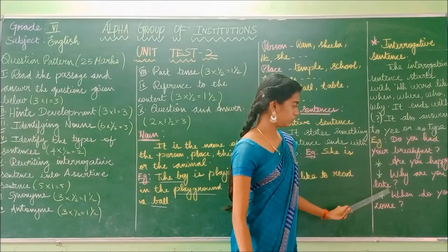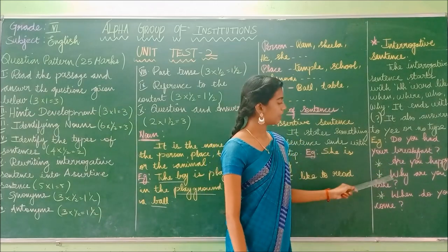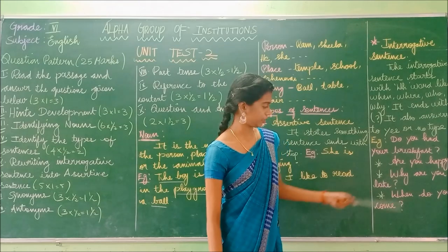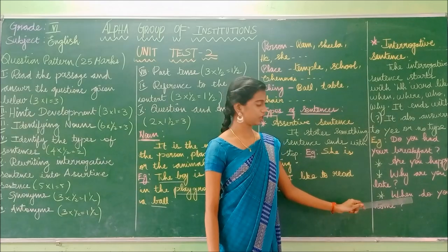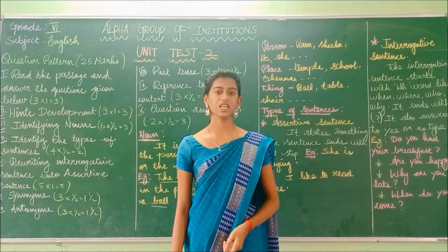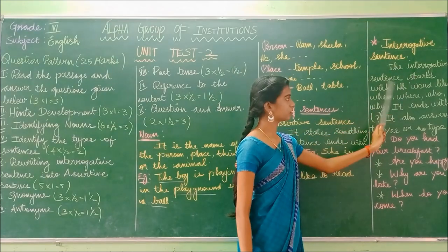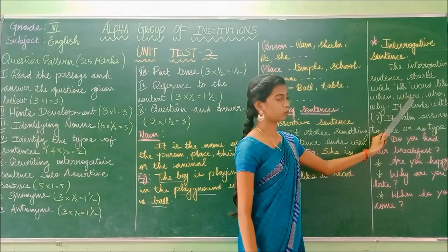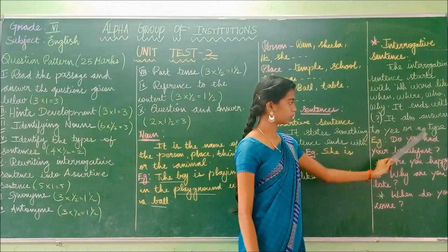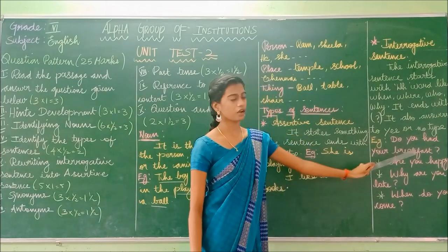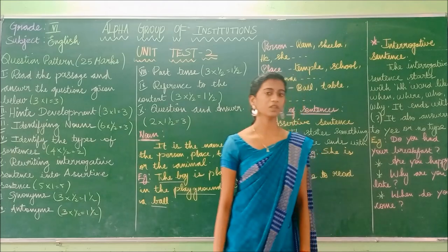'Why are you late?' — this sentence starts with the WH word 'why' and ends with a question mark. 'When do you come?' — also starts with a WH word and ends with a question mark. So these are interrogative sentences. To summarize: interrogative sentences start with WH words like WHEN, WHERE, WHO, WHY, end with a question mark, and may also answer yes or no.